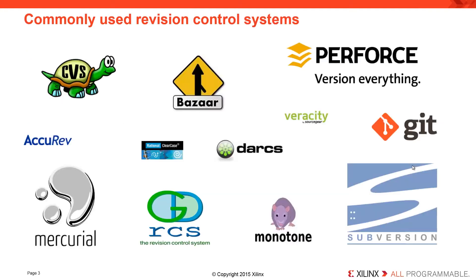This slide shows the names of 12 commonly used revision control systems. Some of these are commercially available, and others are open source.